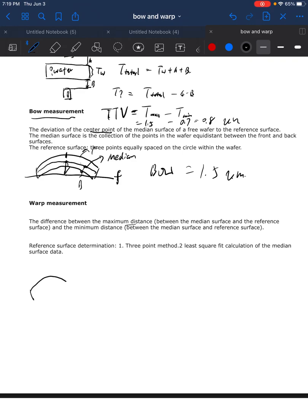Let's say we have a wafer like this. Then let's construct the reference surface as this, and this is the median surface. The warp will be between the maximum distance between the median surface and the reference, which will be from here to here. Let's say this is 1.5.